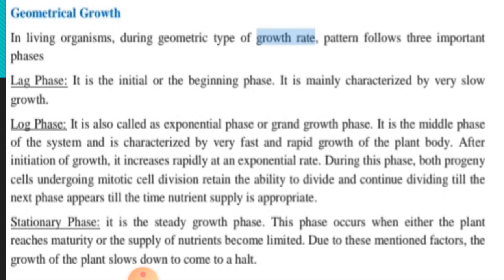The third phase is the stationary phase. It is the steady growth phase. It occurs when either the plant reaches maturity or the supply of nutrients becomes limited. Due to these mentioned factors, the growth of the plant slows down to come to a halt.